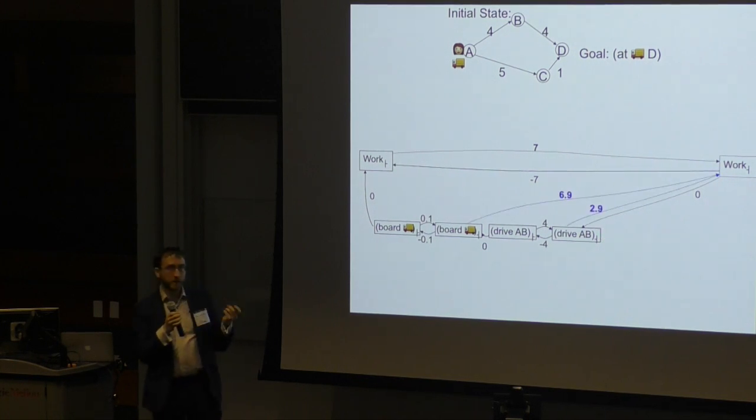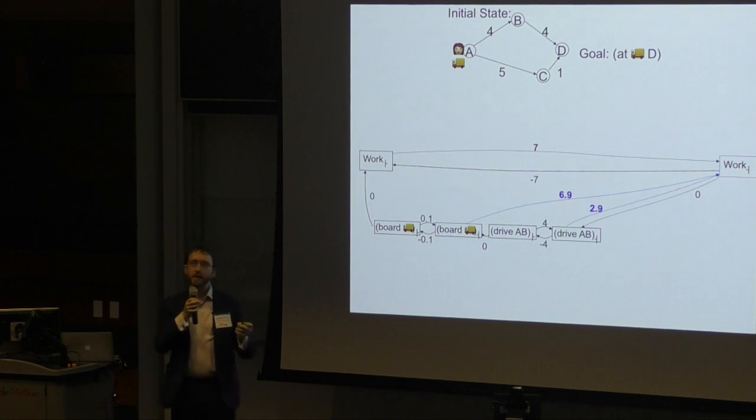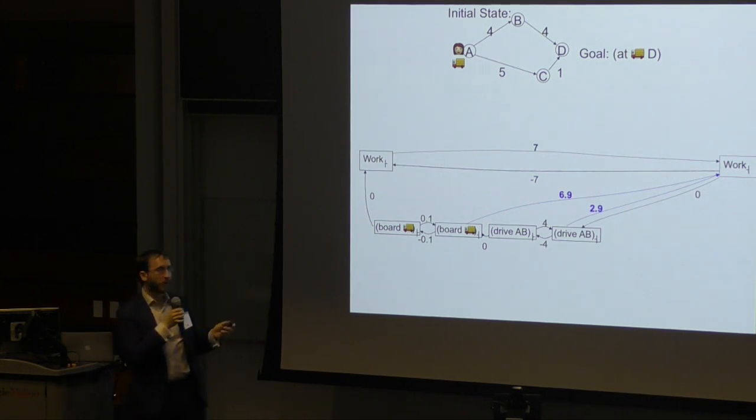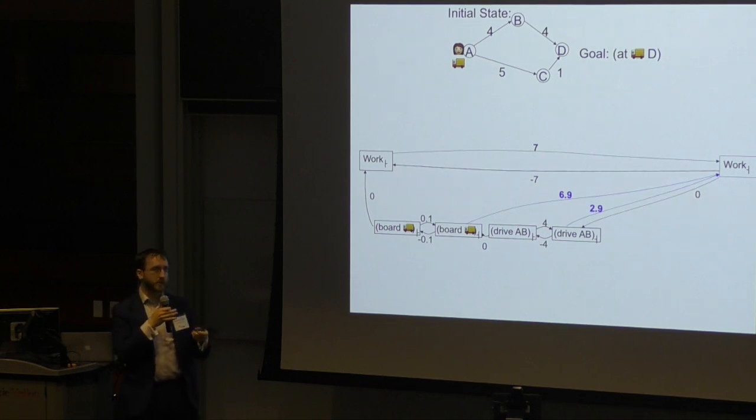What we do have though, because it's a simple temporal network, because it has a graph representation, we can use an all pairs shortest path algorithm to work out the maximum and minimum time that separates any pair of points. We can say we have these actions in the plan so far and we have this future end action which hasn't occurred yet. What's the maximum amount of time that could pass between each of these actions and the end of this action? So this one's 6.9 because board takes 0.1 time units, so that eats up 0.1 of the 7 time units that the work action lasts for which leaves us with 6.9. This one's 2.9 because it was 0.1 and then 4.